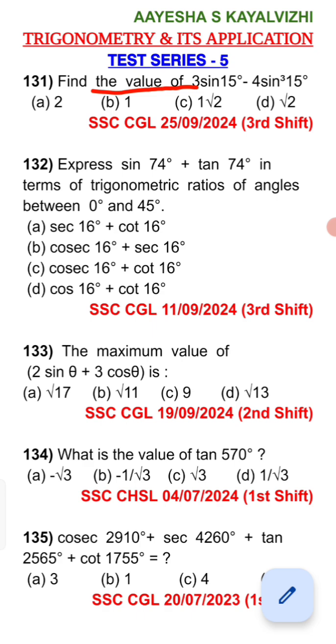express sin74° plus tan74° in terms of trigonometric ratios of angles between 0° and 45°. So what is it? We split 90 minus something, 180 minus something, we split 270° minus. But you can see the angles between 0° and 45°. So we split the value of 0 to 45 degrees.